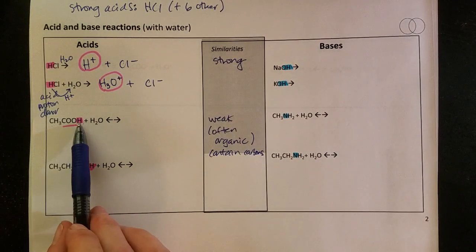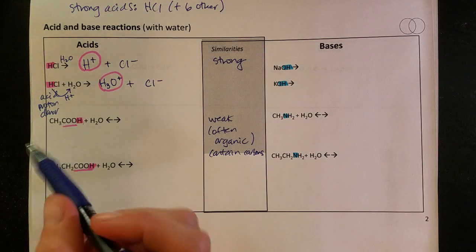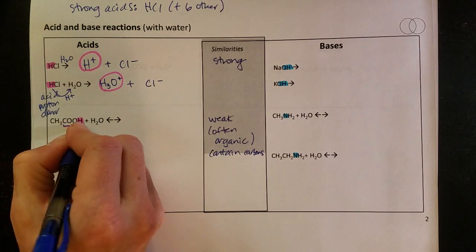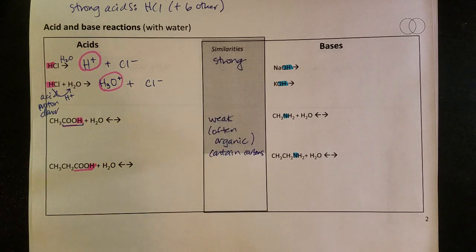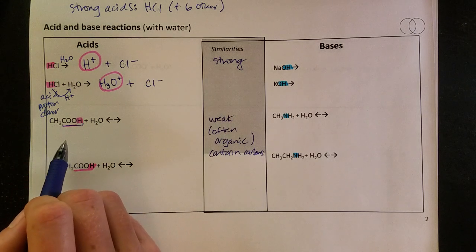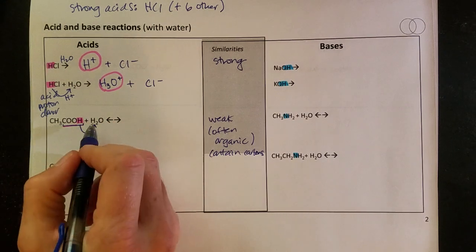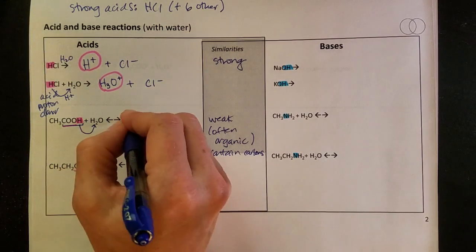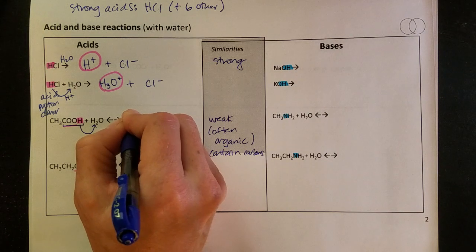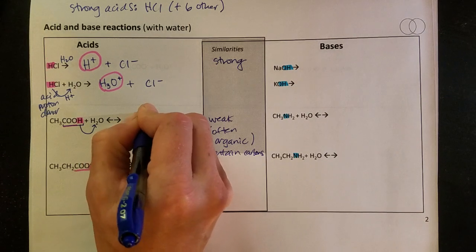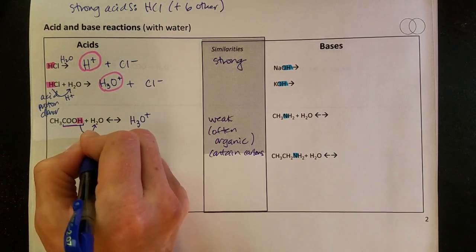So let's take a look here. We've identified that this is an acid. It's got that H, and this whole group is called a carboxylic acid, which we'll see more of in chapter 13. But this proton is going to get donated to the other compound here, and so that leaves me with an H3O plus again, so I send that H plus over.